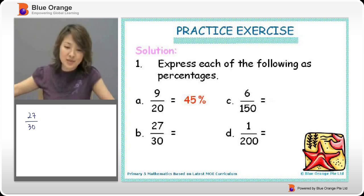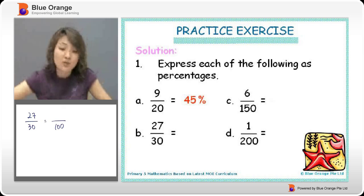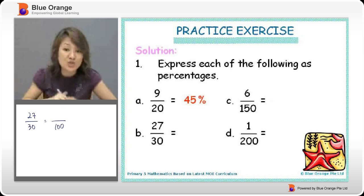Next is 27 over 30. Now, if you look at this, can you change this to 100? It's pretty difficult, isn't it? So there's another way of working at it.